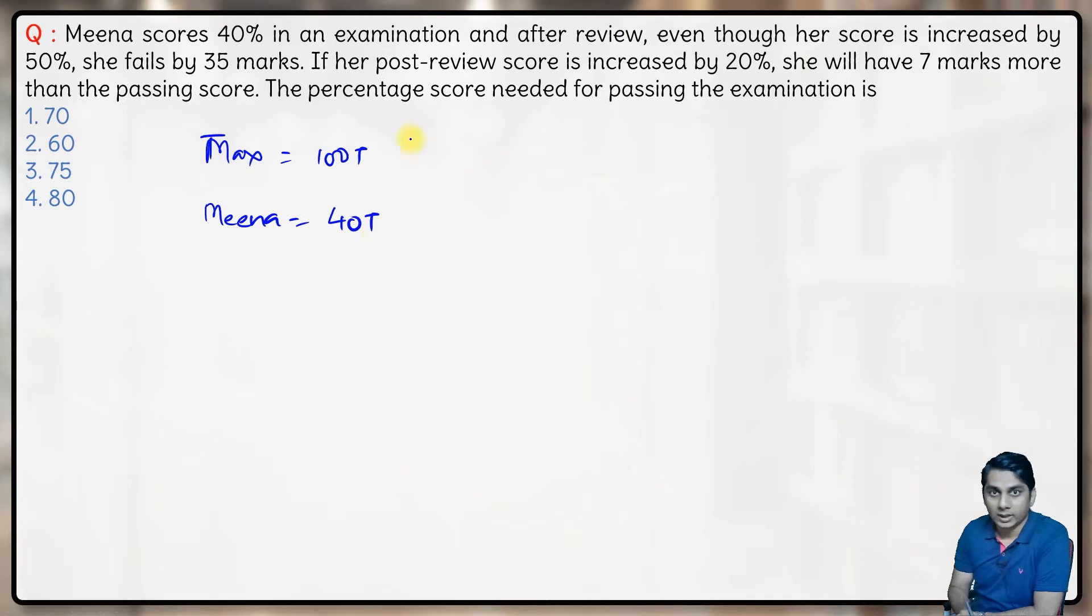Now if her marks increase by 50%, that is, if her marks become 60T, she fails by 35 marks, that means she gets 35 less than passing marks.